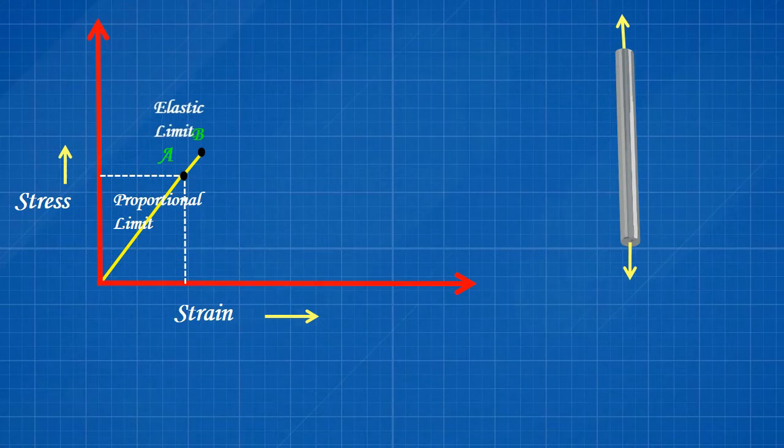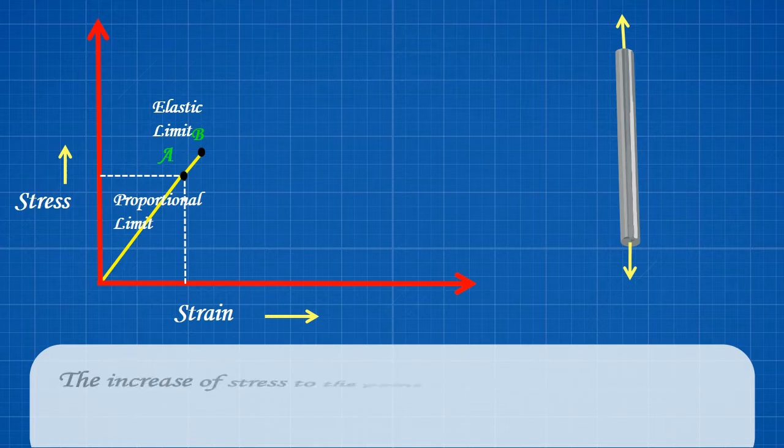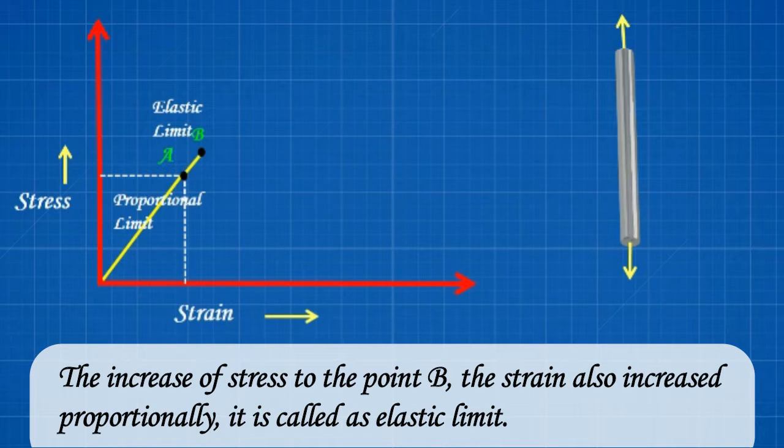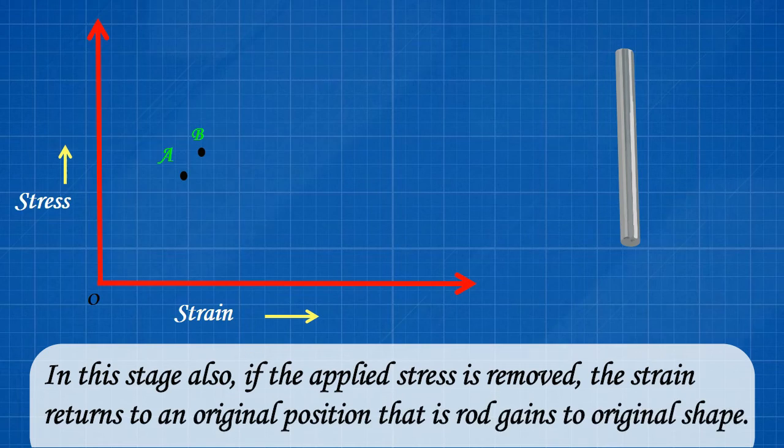Now let us move on the elastic limit stage. Elastic Limit. The increase of stress to the point B, the strain also increased proportionally, it is called as elastic limit. In this stage also, if the applied stress is removed, the strain returns to an original position.